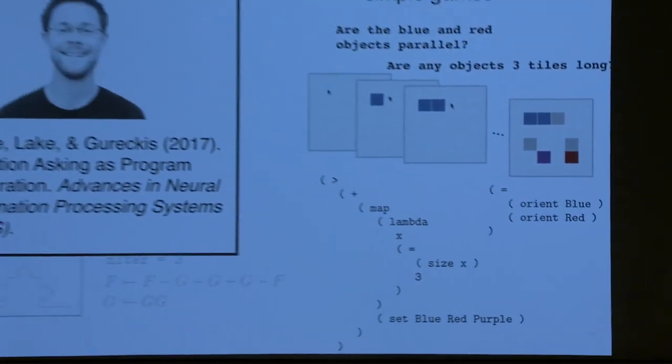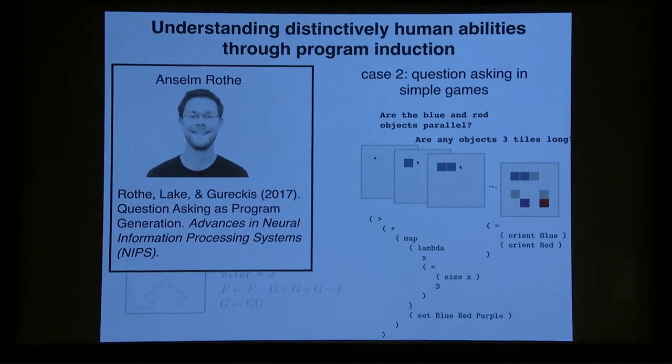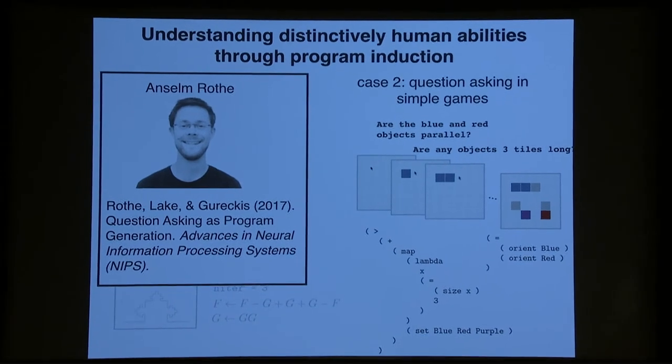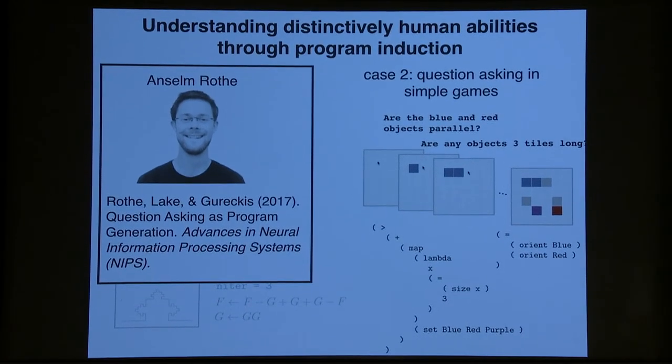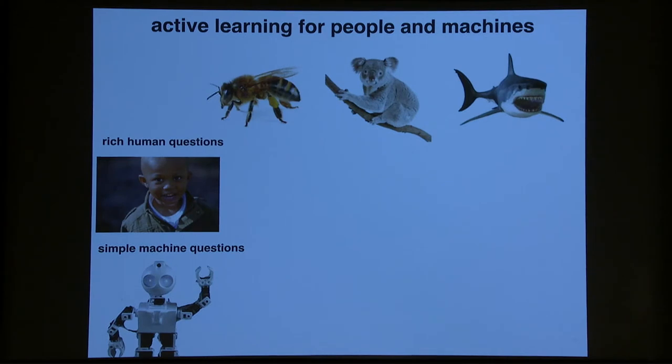The second case study that I want to talk about is about question asking. This was a NIPS paper last year. This is the work of Anselm Rothe, who's a graduate student at NYU, and also my colleague Todd Gureckis. And again, it's motivated by human ability that eludes the best algorithms. And we wanted to compare active learning for people and machines. Say a child is visiting the zoo, and they're learning about animals. And the boy sees this bee.